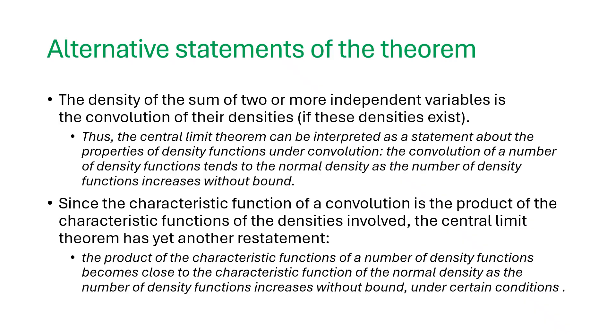Second one looks like this. Since the characteristic function of a convolution is the product of the characteristic functions of the densities involved, the central limit theorem has yet another restatement. It is given as, the product of the characteristic functions of a number of density functions becomes closer to the characteristic function of the normal density as the number of density functions increases without bound, under certain conditions.